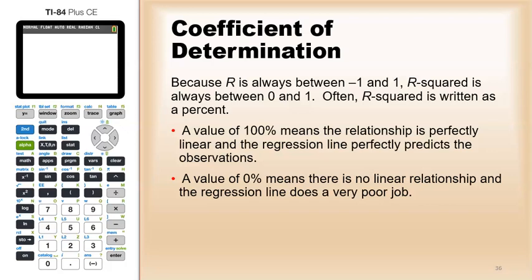So if you end up with 100%, what that means is that you can draw a line through every single point of your scatter plot. So a value of 100% means the relationship is perfectly linear and the regression line perfectly predicts observations. So whatever x value you picked, you can predict the y value perfectly.